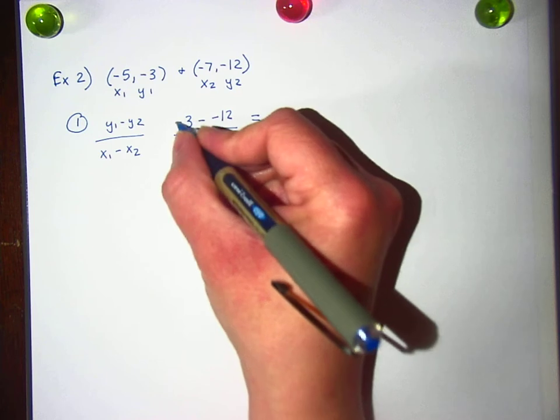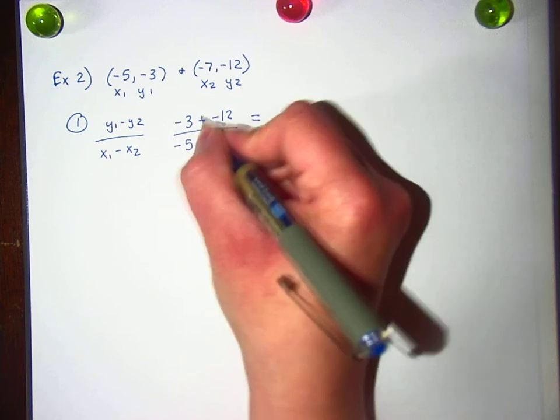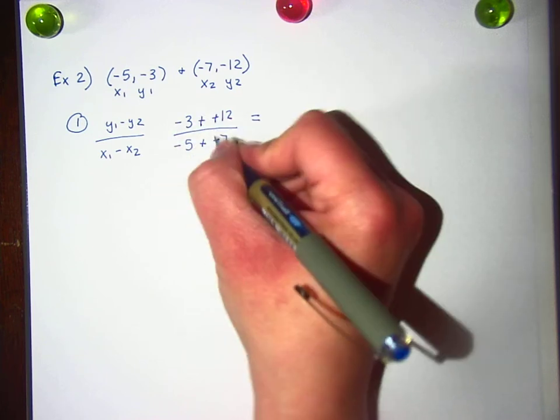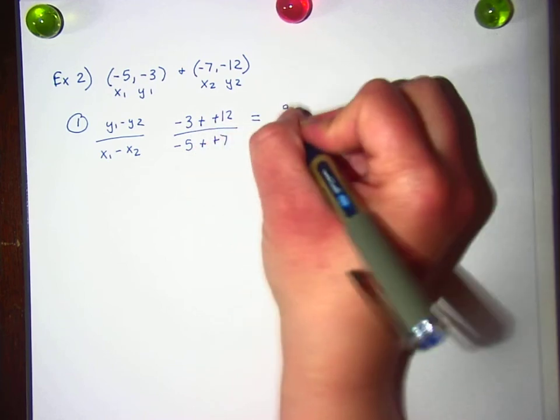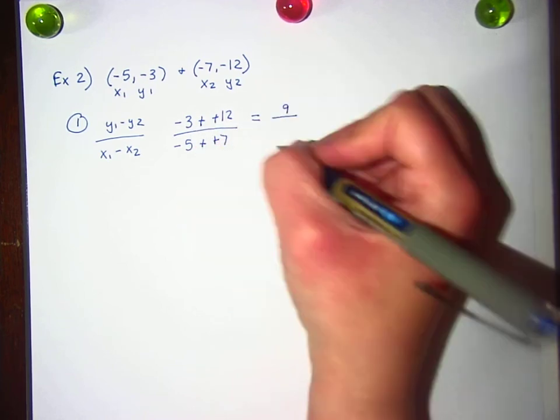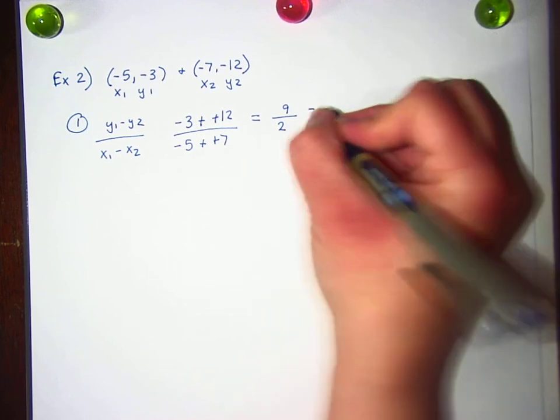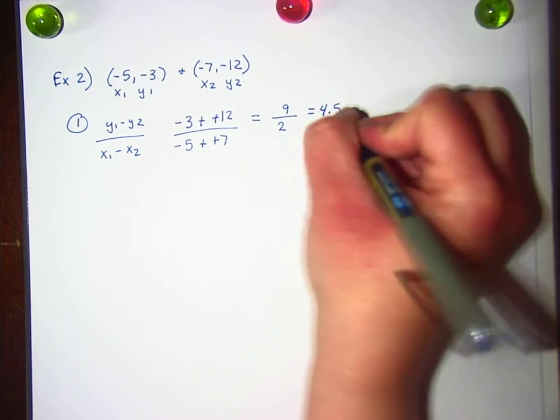Remember, two negatives right in a row. Not this negative over here, but these ones right here. Here, they become positives. Negative 3 plus 12 is positive 9, and negative 5 plus 7 is positive 2, which means that my slope is 4.5.